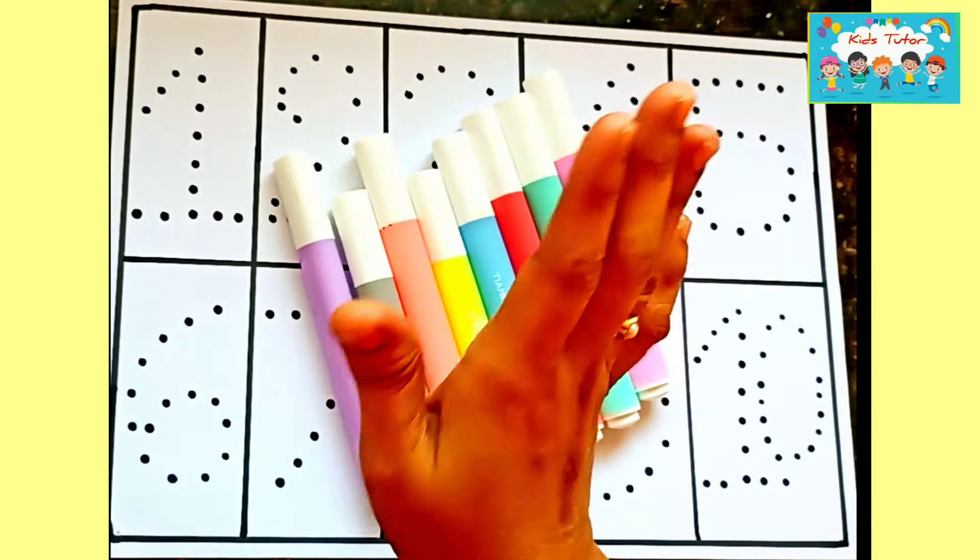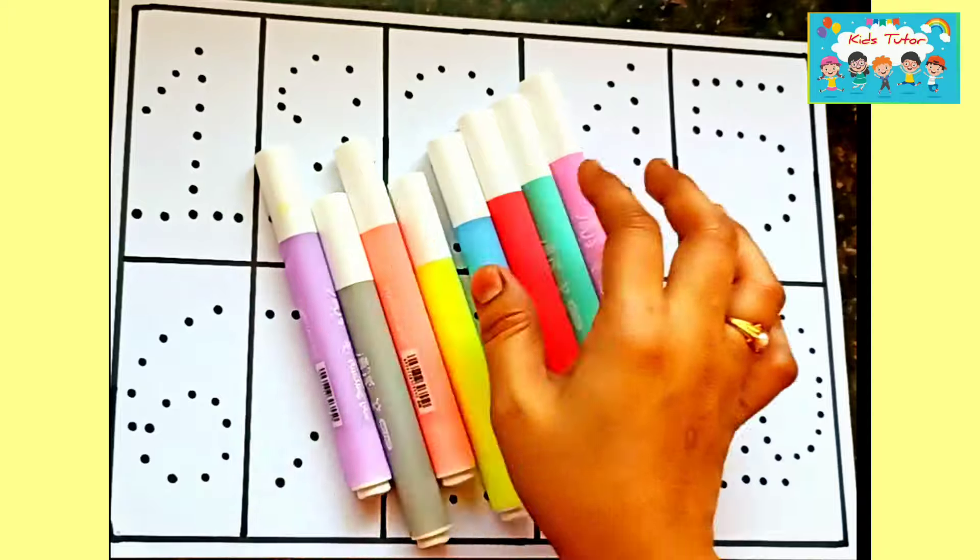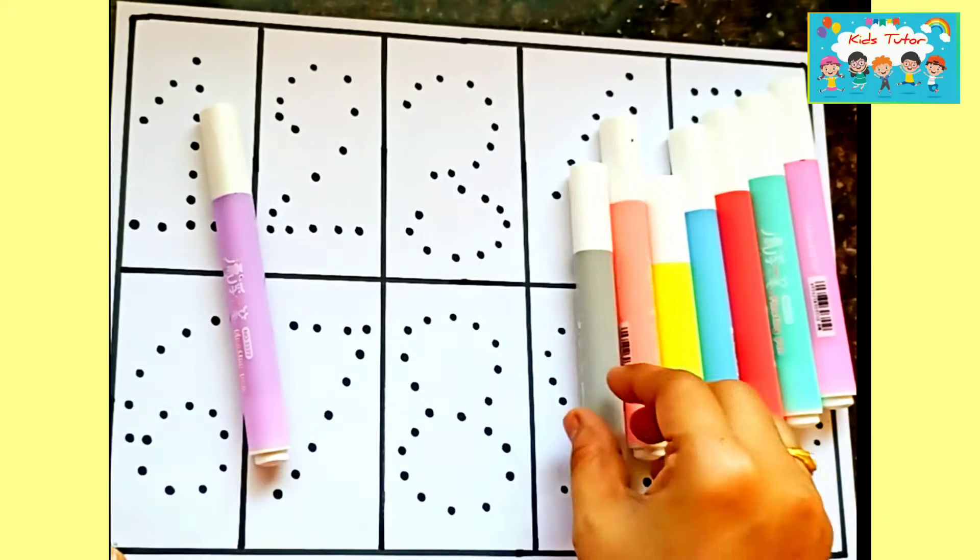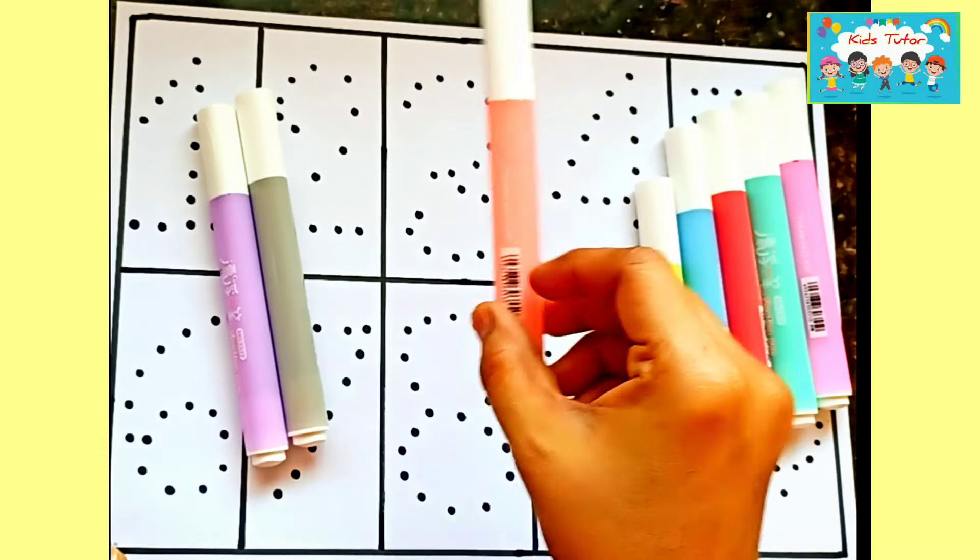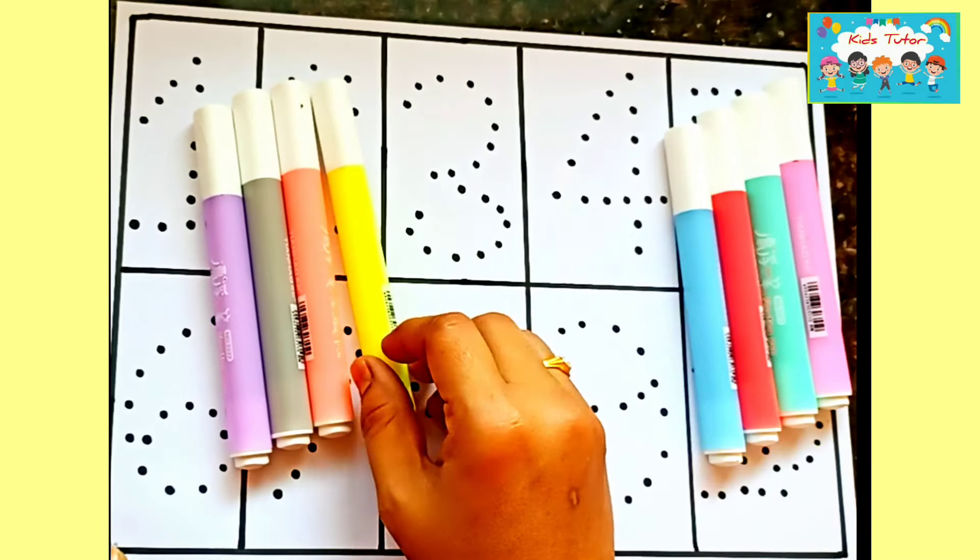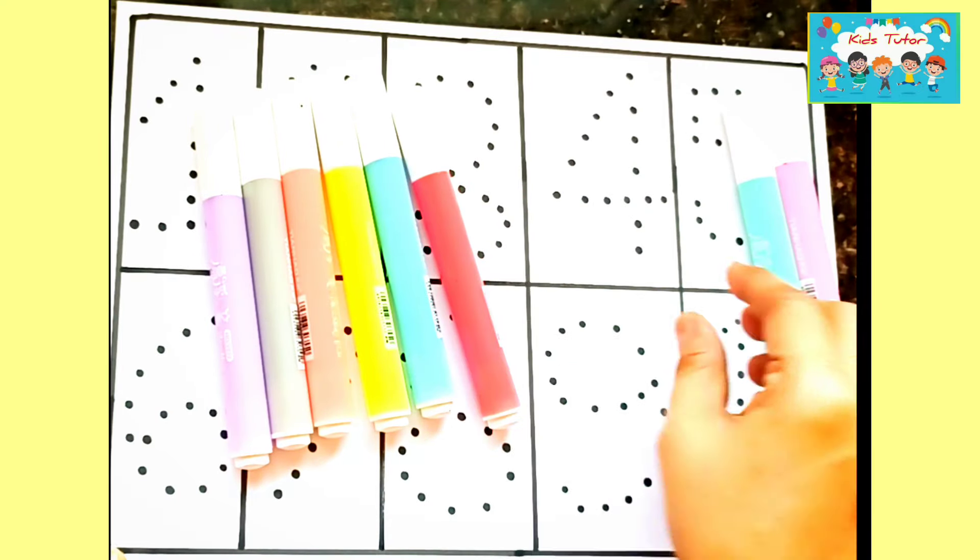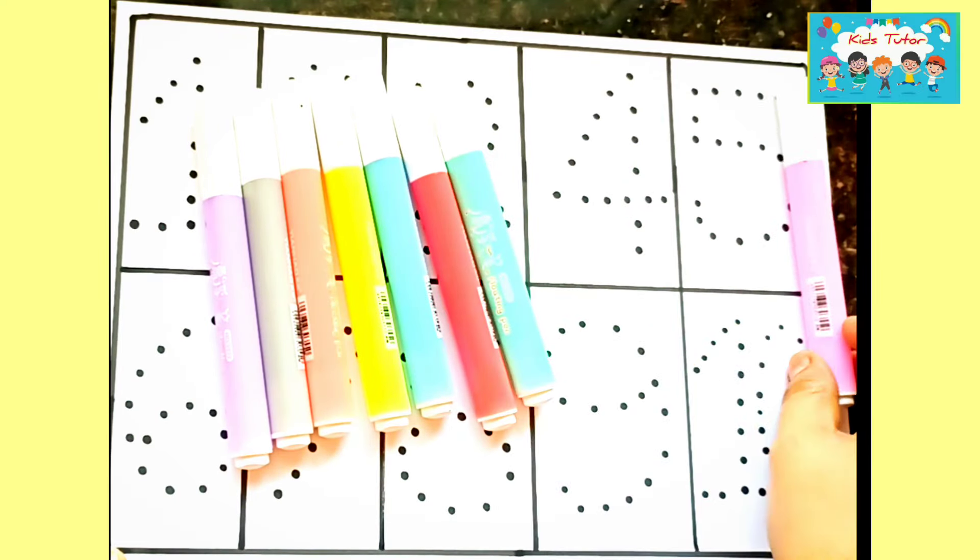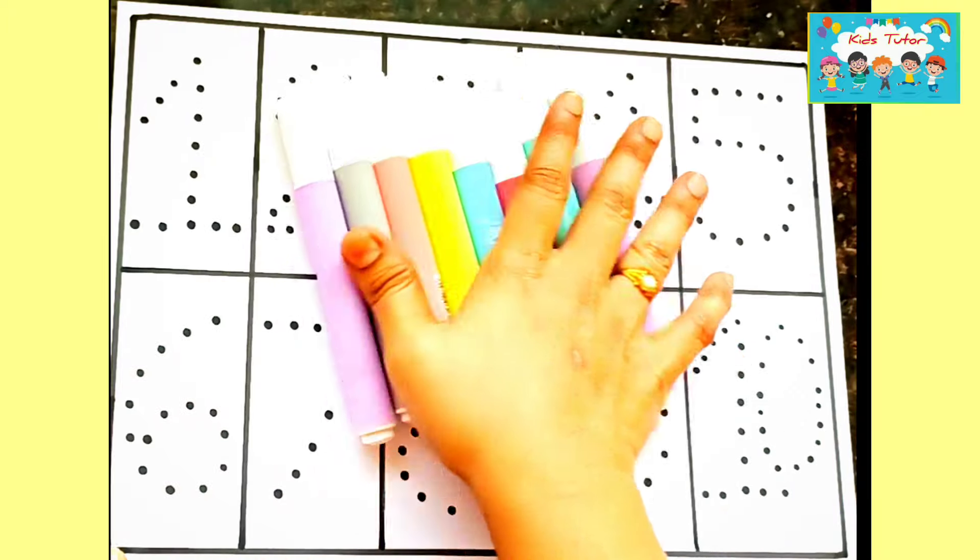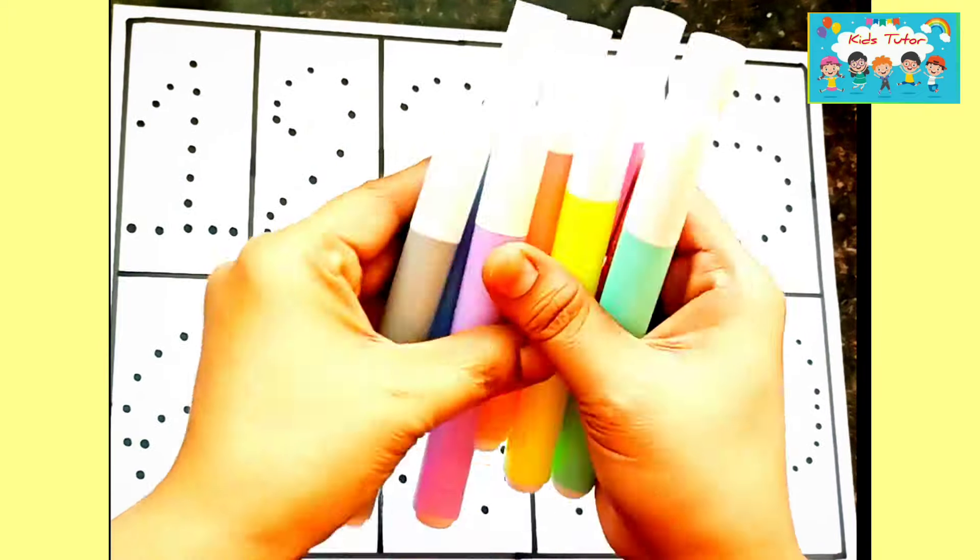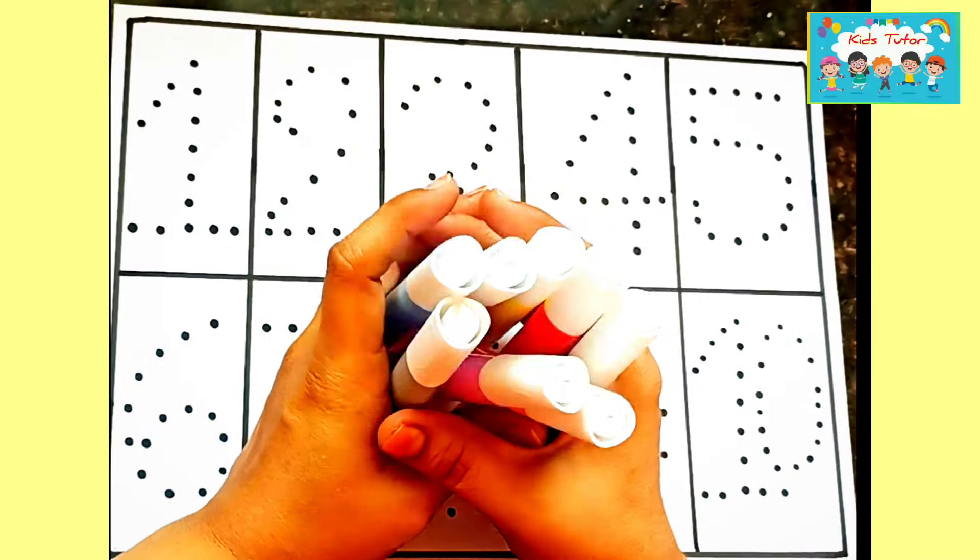Hello kids, welcome to our channel. Now let us learn some color names: purple color, black color, orange color, yellow color, blue color, red color, green color, pink color. Now let us learn to write numbers using colors.